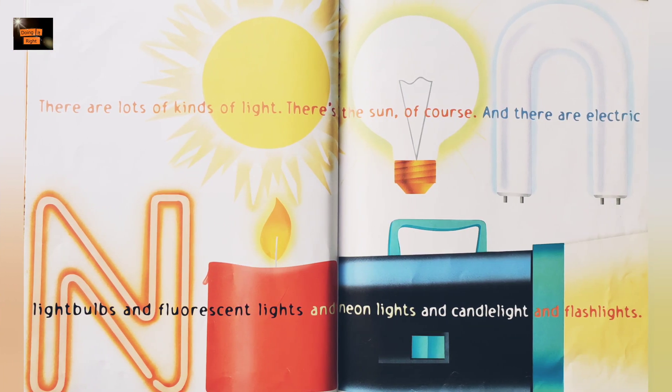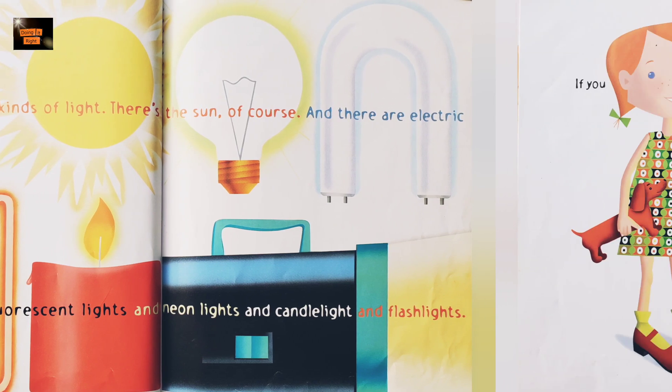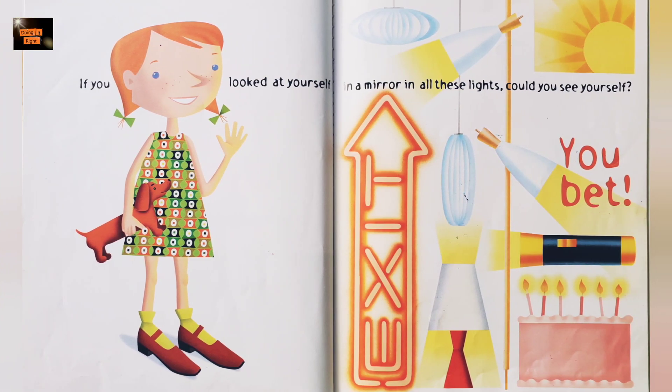There are lots of kinds of light. The sun, of course. And there are electric light bulbs and fluorescent light. And neon lights and candle lights and flashlights. If you looked at yourself in a mirror in all these lights, could you see yourself? You bet.